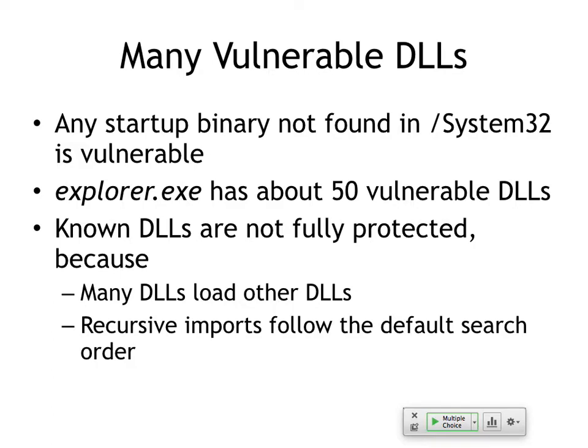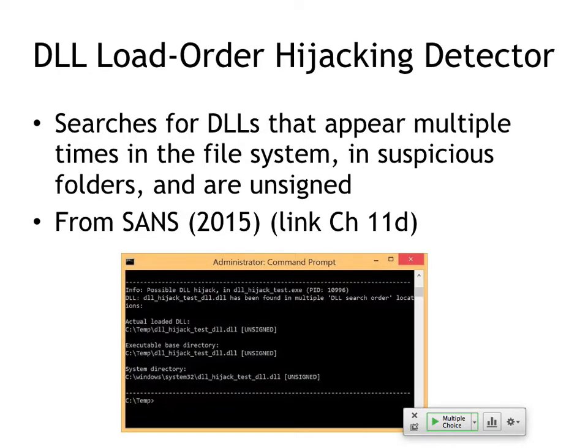Startup binaries not found in System32 are vulnerable. Explorer.exe alone has 50 vulnerable DLLs. Known DLLs are not fully protected because DLLs can load other DLLs that aren't themselves known DLLs, and those recursive imports follow the search order. There's a detector for this from SANS from 2015 — it will hunt for DLLs that appear multiple times in the file system and in suspicious or unsigned locations. There should be only one copy of each DLL in the right place.